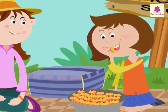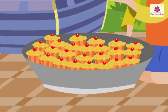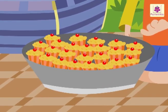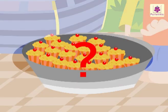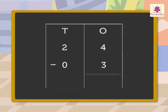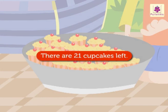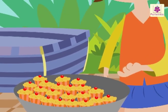Look, Nancy is eating yummy cupcakes. There are 24 cupcakes and Nancy ate three cupcakes. How many cupcakes are left? Let's subtract 3 from 24. Four minus three is equal to one, two minus zero is equal to two. Thus the difference of 24 and 3 is 21. There are 21 cupcakes left. Hmm, don't they look yummy!